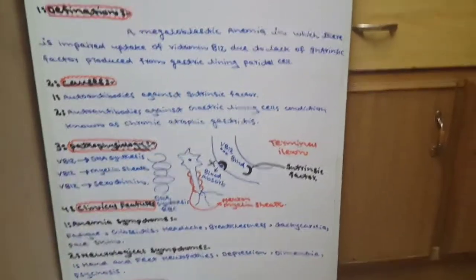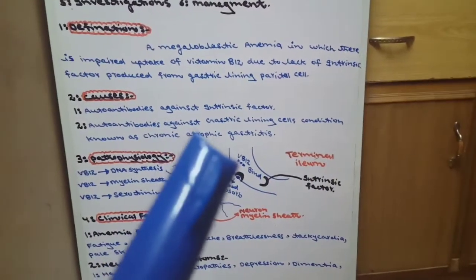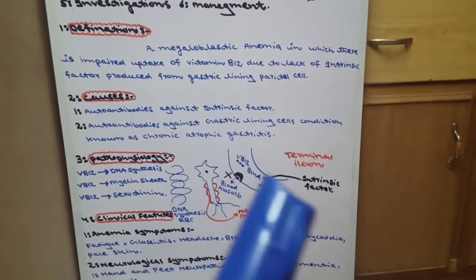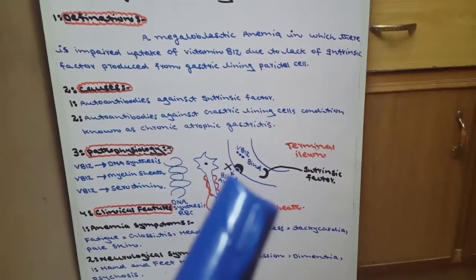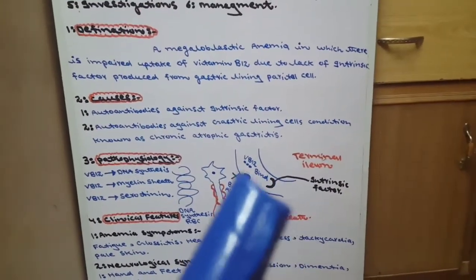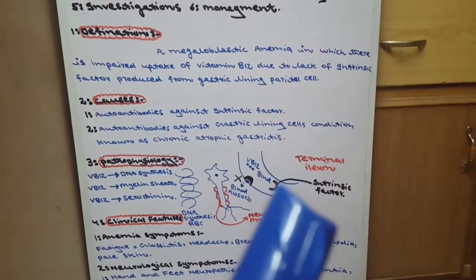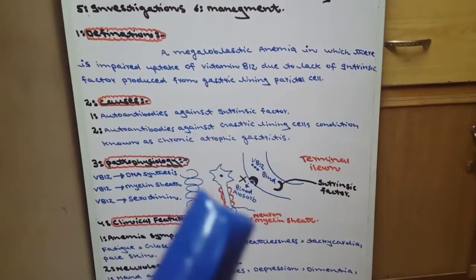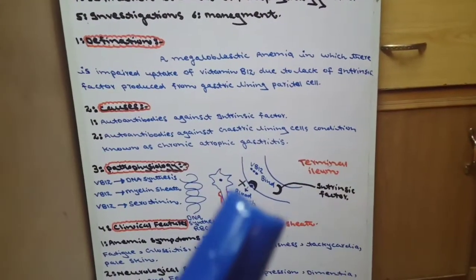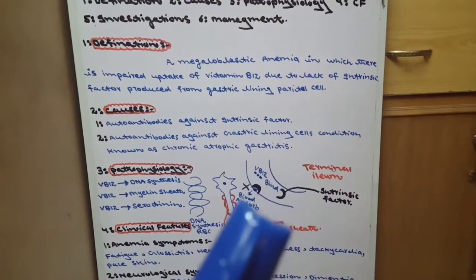Now pathophysiology. Normally, vitamin B12 binds with intrinsic factor and is then absorbed by the blood. But if there is no intrinsic factor, or there are antibodies against intrinsic factor or gastric parietal cells, then vitamin B12 will not be absorbed from the GIT into the blood.